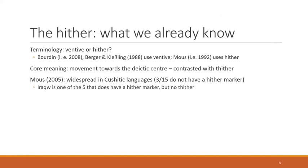The hither is one of the forms the selector can take, and it is realized as either 'ni' or 'na.' Before I go into the context and functions of the hither, a quick note on terminology. The hither is also often referred to as the ventive — for example by Bourdin in his papers, and also in the corpus by Berger and Kiesling. However, I follow Maus who uses 'hither,' because 'ventive' implies a heavy emphasis on movement, even though there are many occurrences of the hither where no movement is involved at all.